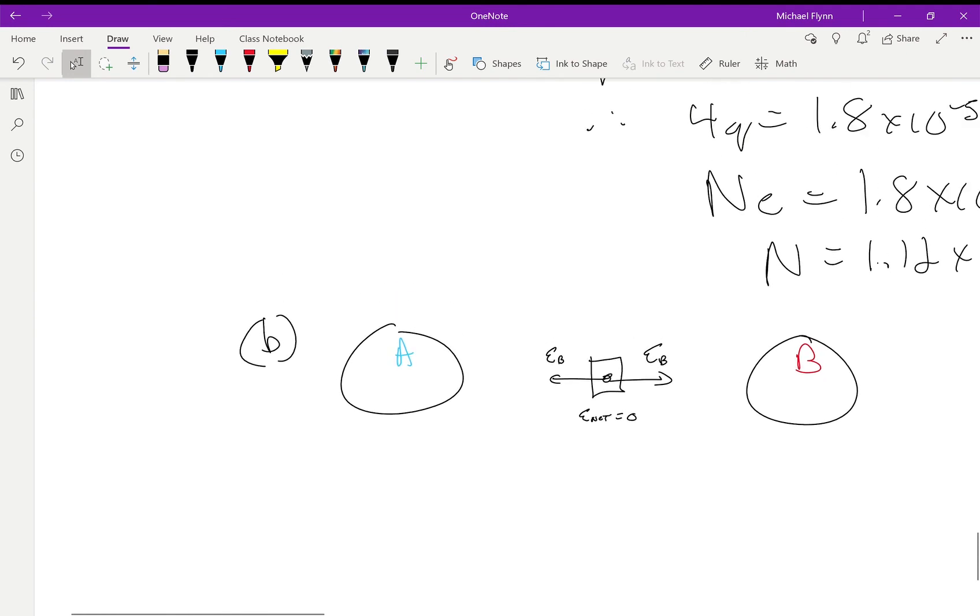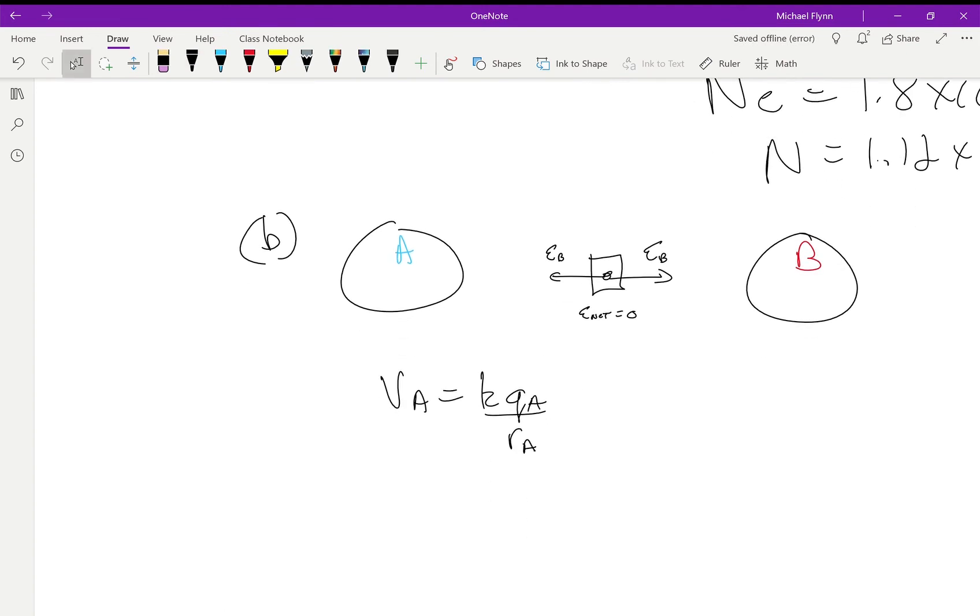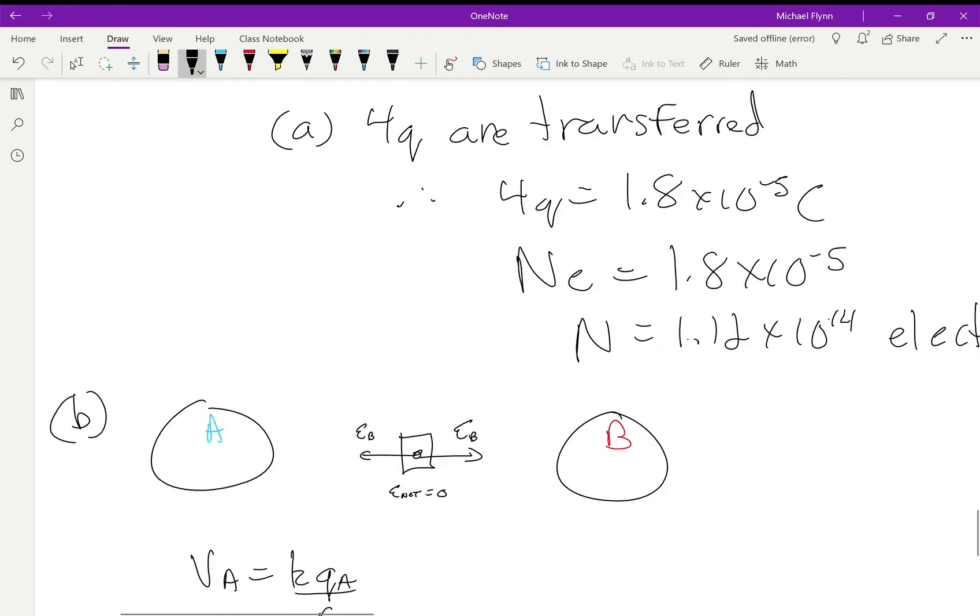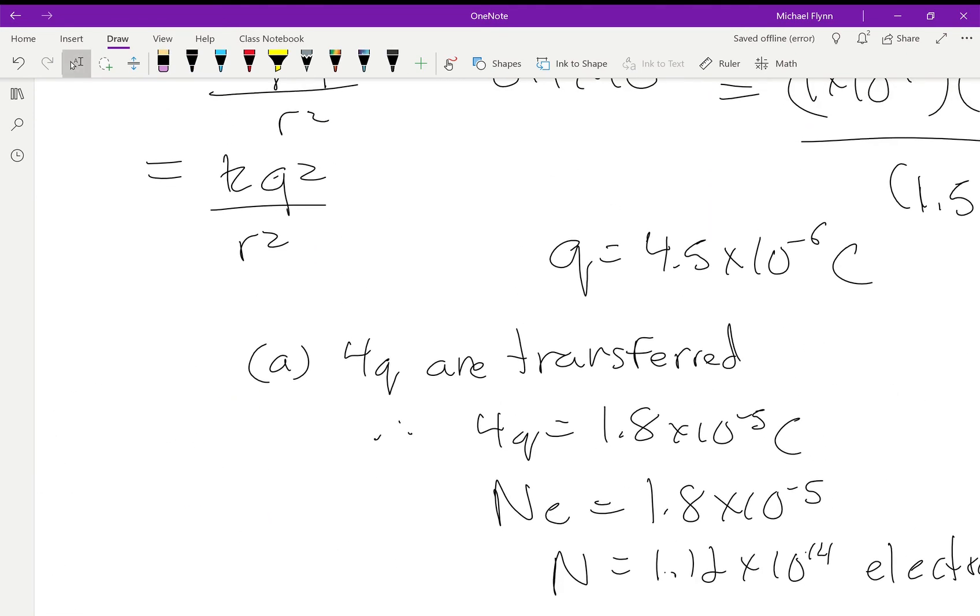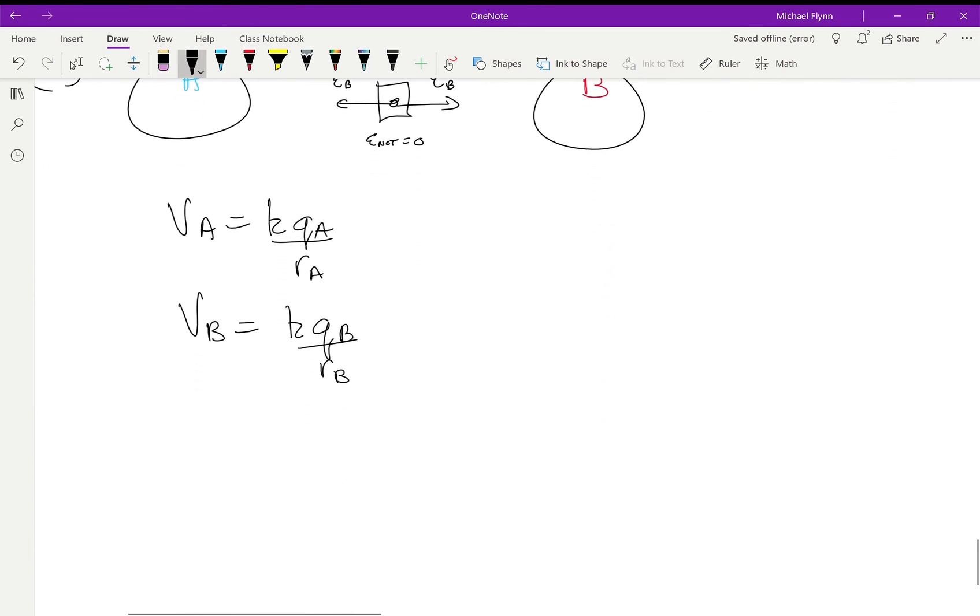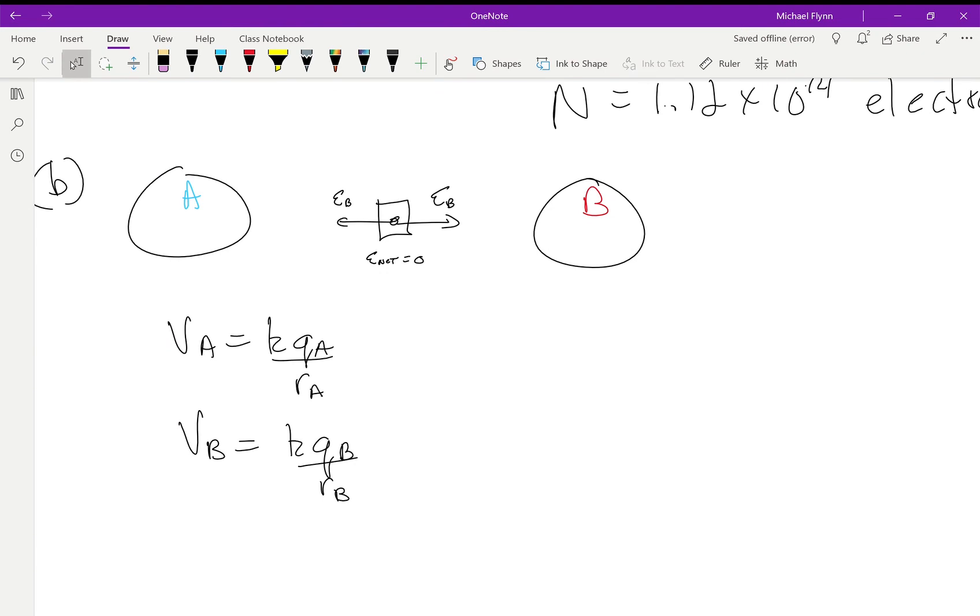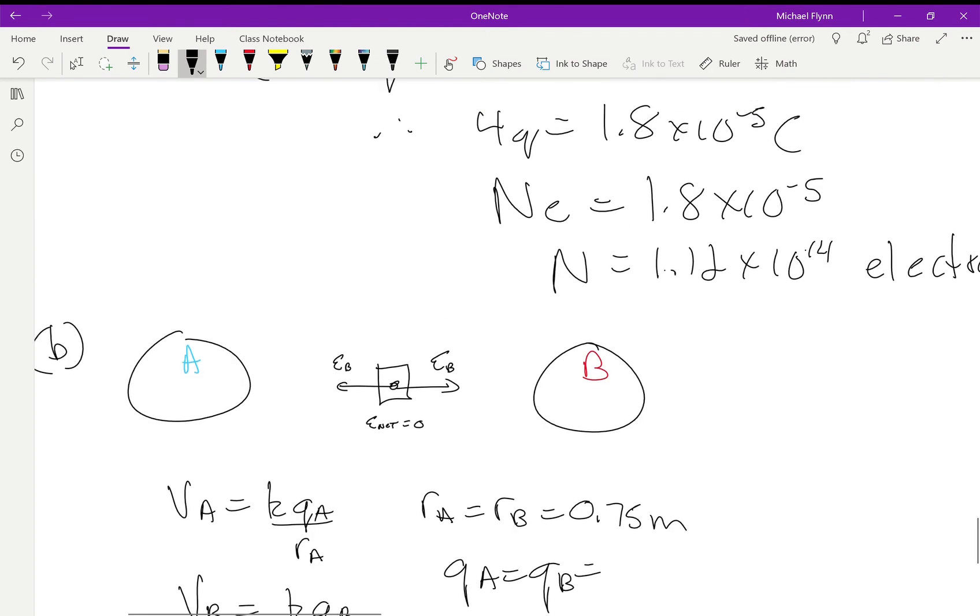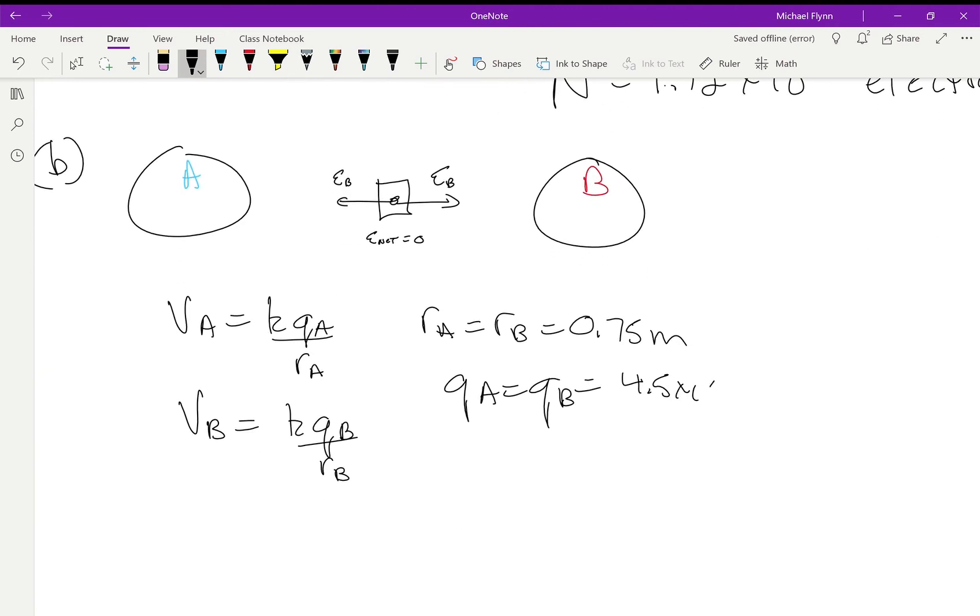Now what about the potential? The potential is different. To get the potential, V_A would be k q_A over r_A, and V_B would be k q_B over r_B. We know what q_A and q_B are—they're both 4.5 times 10 to the negative 6, so you're going to get the same numbers here. And r is halfway between, so it's 0.75. So r_A equals r_B equals 0.75 meters. q_A equals q_B, and they're both positive 4.5 times 10 to the negative 6. Now of course, you're going to add these numbers together—the total voltage would be V_A plus V_B. And that's it, my friends, that's how you do question B.